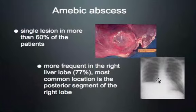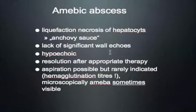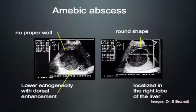Most often there is a single lesion, more frequent in the right liver lobe and most commonly in the posterior segment. An elevated right hemidiaphragm on chest X-ray may be a clue. On ultrasound, the liquefaction necrosis produces the classic 'anchovy sauce' appearance on aspiration. The lesion has no actual wall, is generally hypoechoic, and with appropriate metronidazole treatment it first changes appearance and then shrinks.